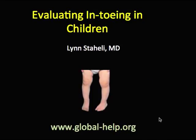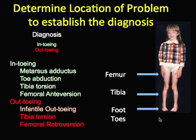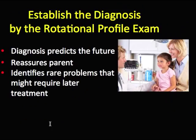In this brief video we're going to discuss evaluating intowing in children, which requires first a diagnosis to determine the problem site — whether the femur or tibia is involved. Intowing is often due to metatarsus adductus, toe abduction, internal tibial torsion, or internal femoral torsion, sometimes referred to as increased anteversion syndrome. External rotation is often due to infantile outtowing, tibial external torsion, or femoral retroversion.